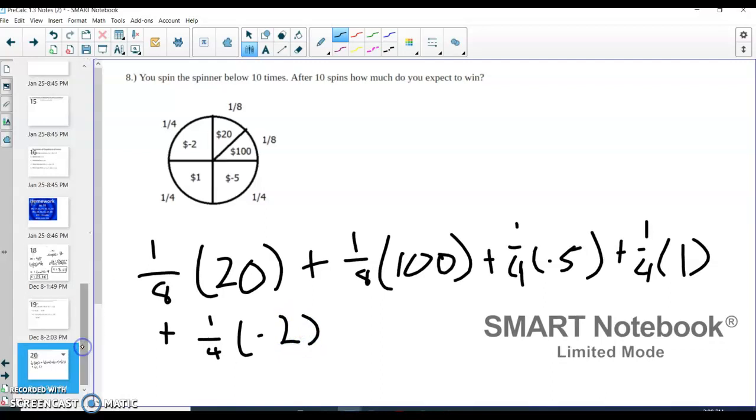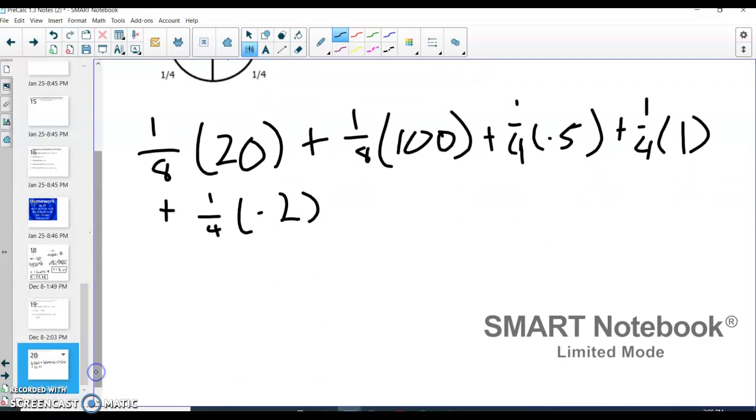If I do this, and I can use my calculator to help me, if I figure out what this equals, that's my expected value after 1 spin. So let's do that. 1/8 times 20, well, that's the same thing as 20 divided by 8, and that gives me 2.5. Plus 1/8 times 100, which is 100 divided by 8, and that is 12.5.